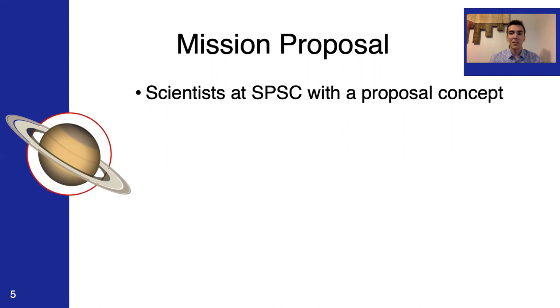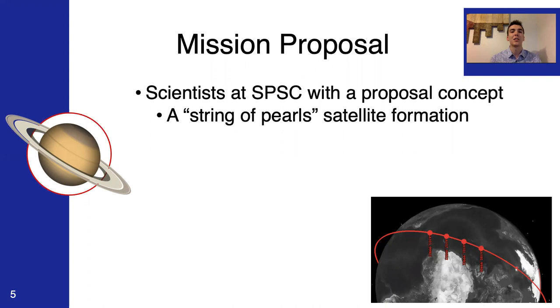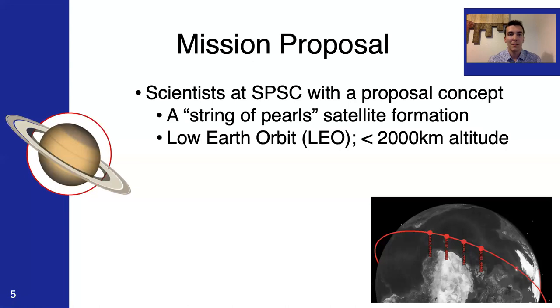They were specifically designing a mission with the following details. They were going to have multiple satellites arranged in a string of pearls satellite formation. So, as you can see from this image, there's one orbit, but there are multiple satellites on this orbit arranged in a line. So, it does look like a necklace or a string of pearls. They also specified it was going to be low earth orbit, so below 2,000 kilometers in altitude. Specifically, they were ballparking around 400 to 600 kilometers in altitude.